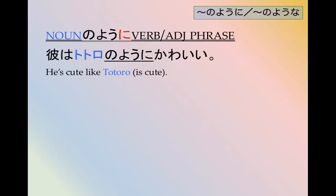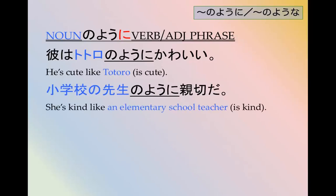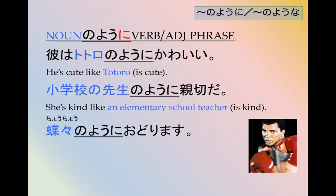彼はトトロのように可愛い. He is cute like Totoro. He's cute like Totoro is cute. 小学校の先生のように親切です. She's kind, like an elementary school teacher is kind. 小学校の先生のように親切です. 蝶々のように踊ります. To dance like a butterfly dances.